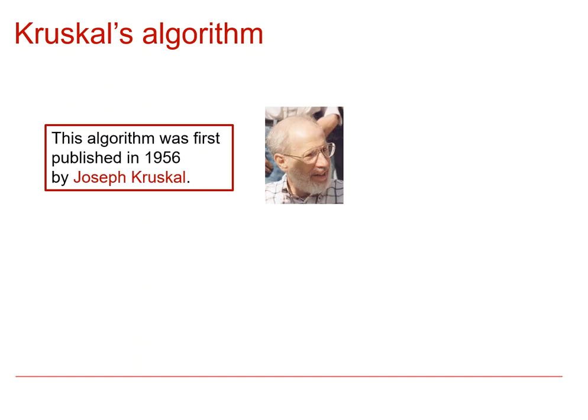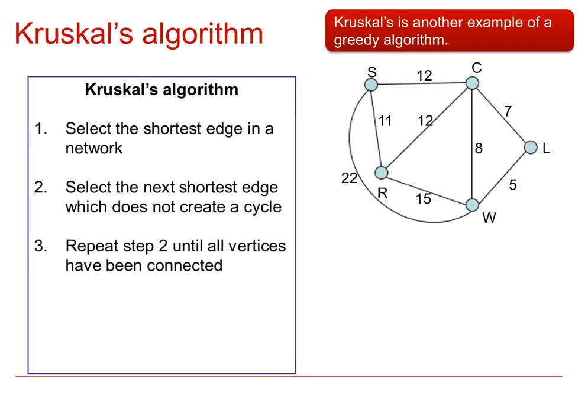Joseph Kruskal first came up with the algorithm that we're about to see in 1956. So here is Kruskal's Algorithm written out. It is another example of a greedy algorithm, it's just that this time the thing that we're going straight for is the shortest arc every time.